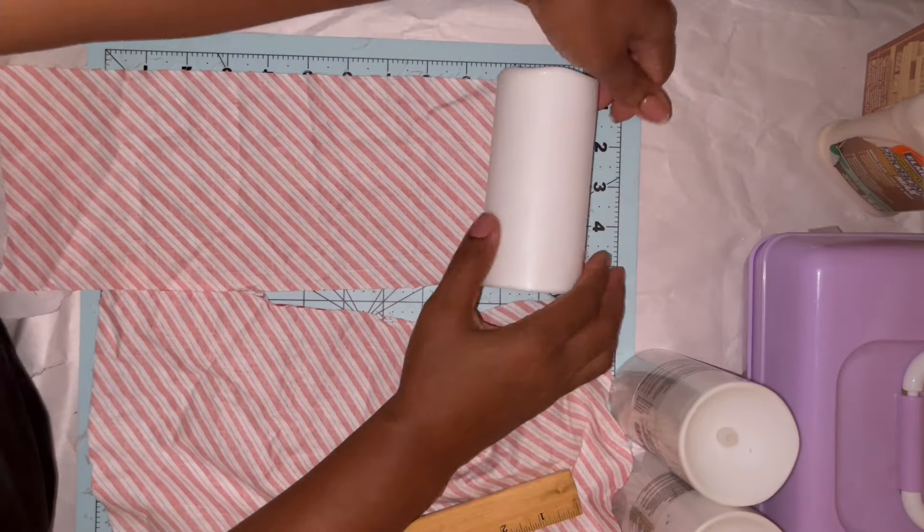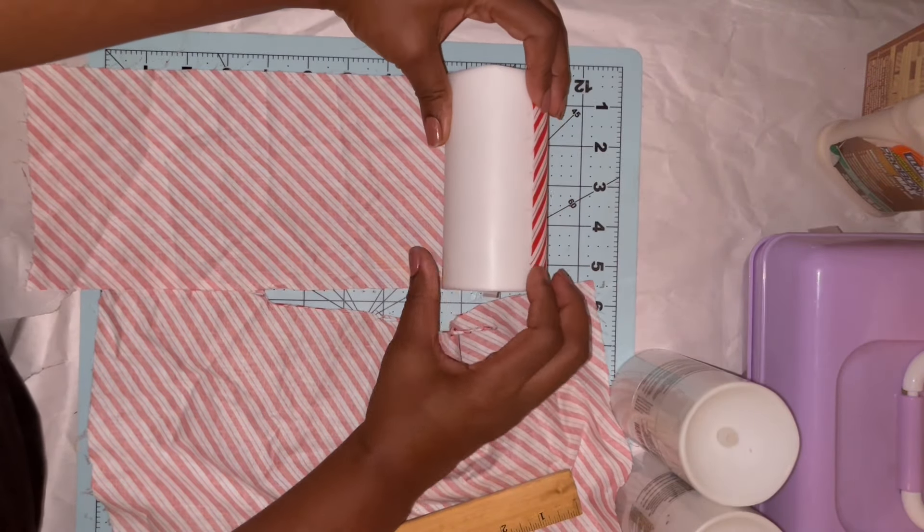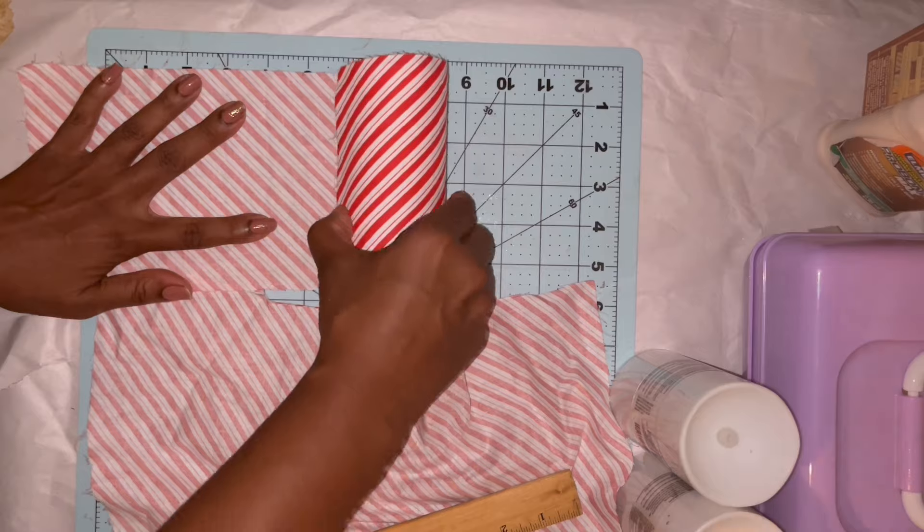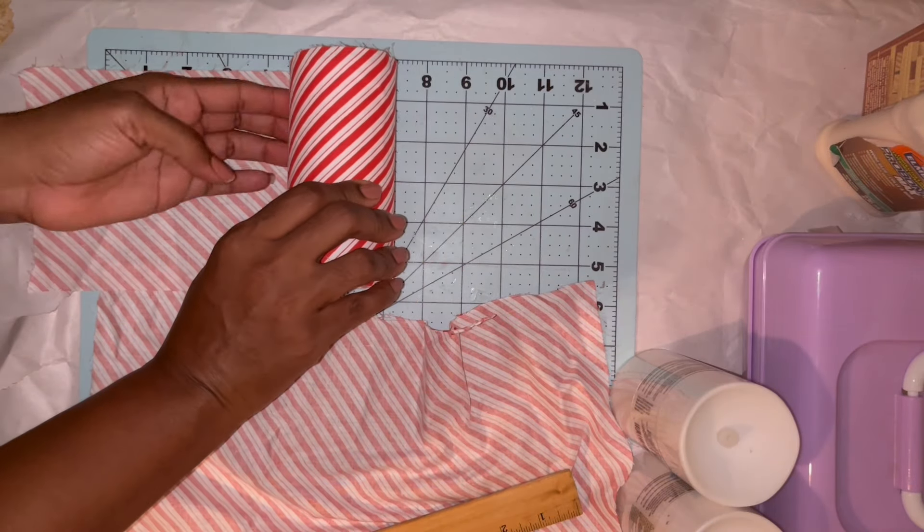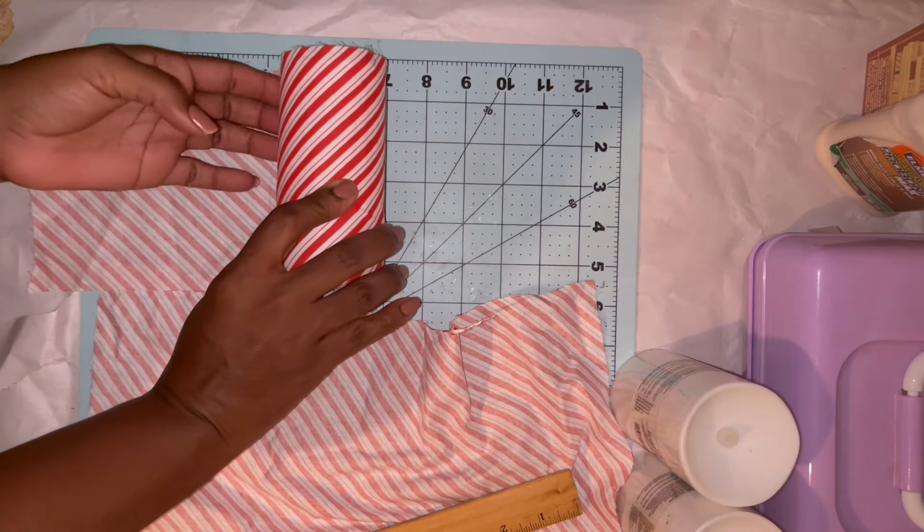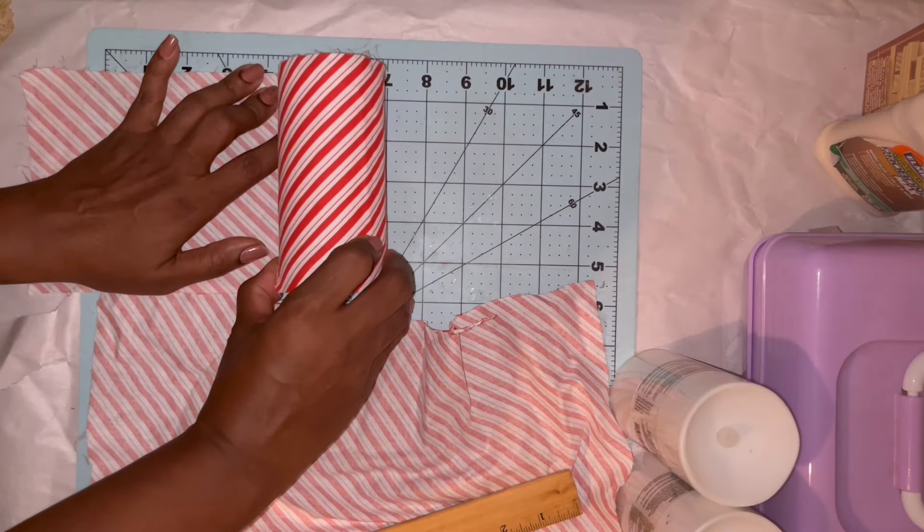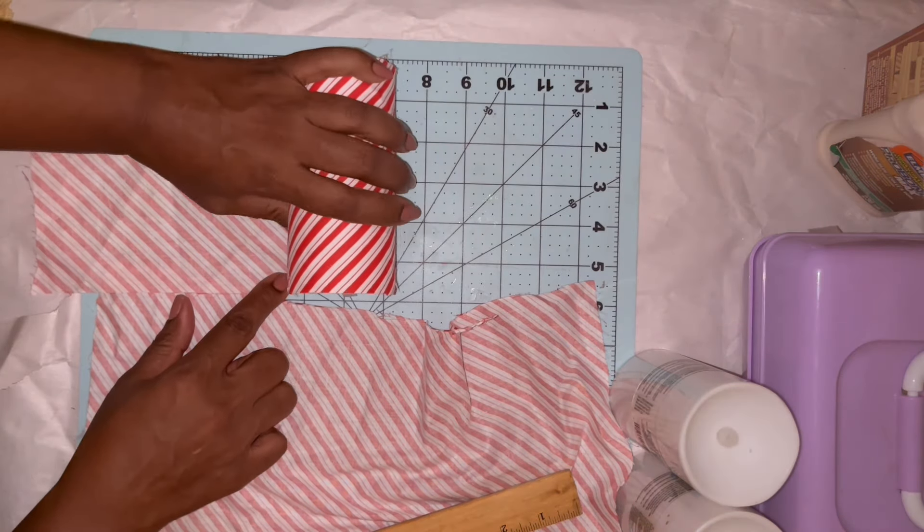So with my strips cut, I just do a dry fitting, rolling my fabric up to see about where I should cut my excess. And I will end up having enough from each roll to do some other DIYs with.